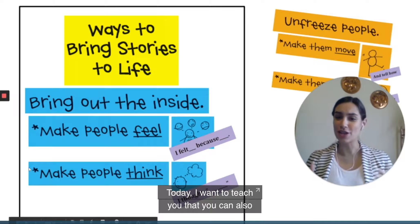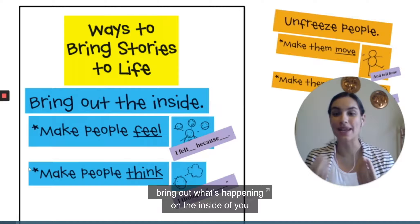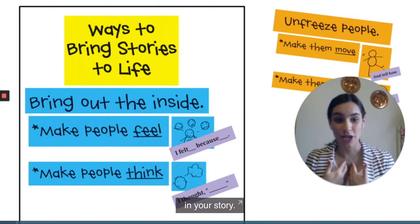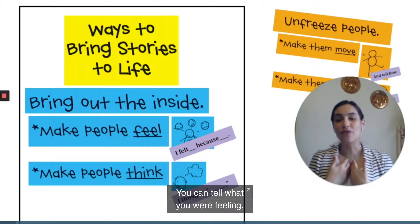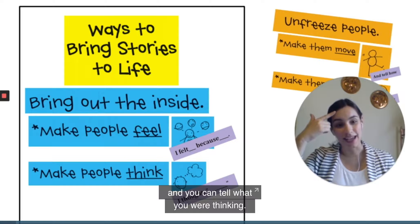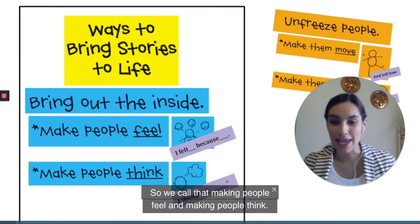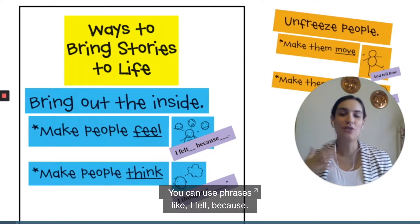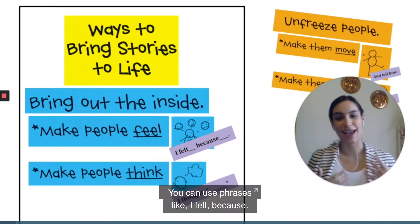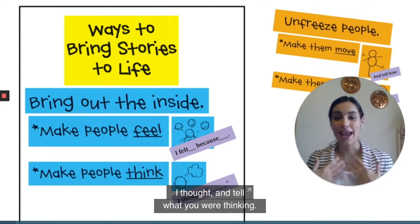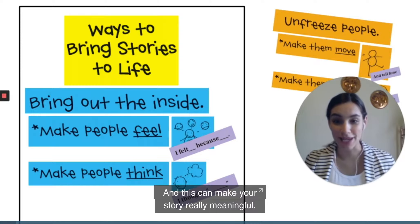Today I want to teach you that you can also bring out what's happening on the inside of you in your story. You can tell what you were feeling and you can tell what you were thinking — we call that making people feel and making people think. You can use phrases like 'I felt' and 'because I thought' to tell what you were thinking, and this can make your story really meaningful.